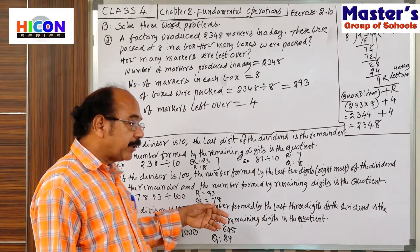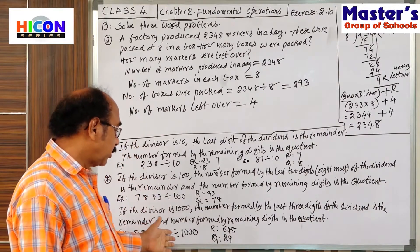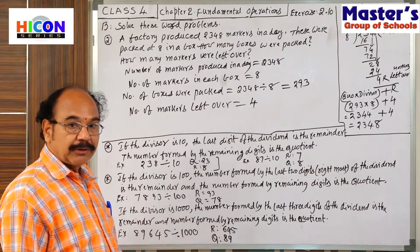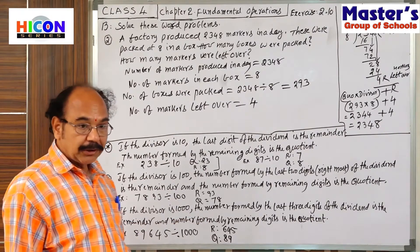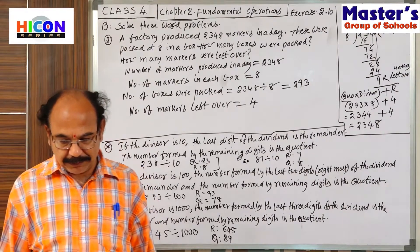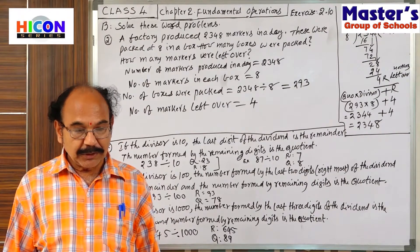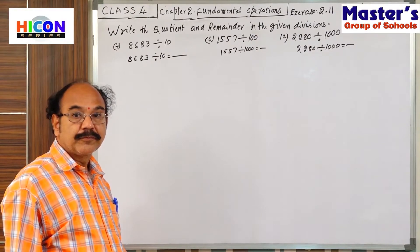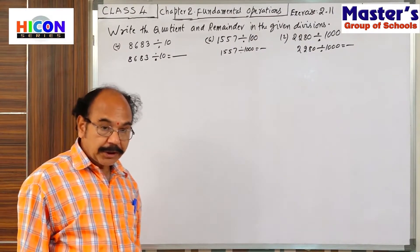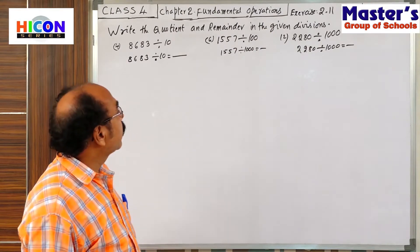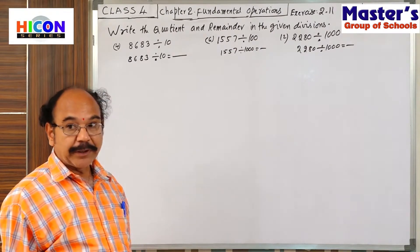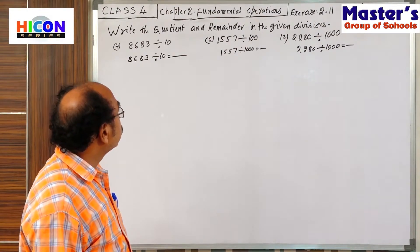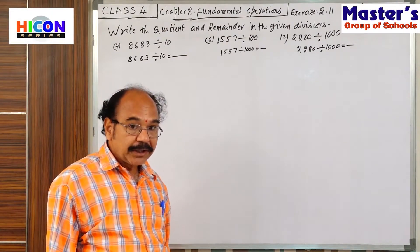Just by following these key points, very easily we can find the quotient and remainder without taking much time. Okay, children, are you all understanding? With the help of these points, we can go to the next exercise. Okay, dear students, now we enter into Exercise 2. Write the quotient and remainder in the given divisions.